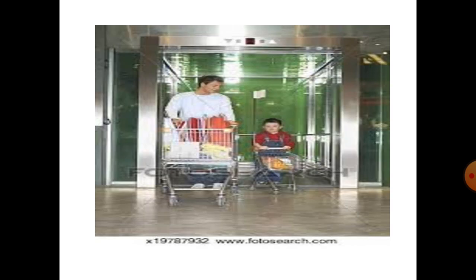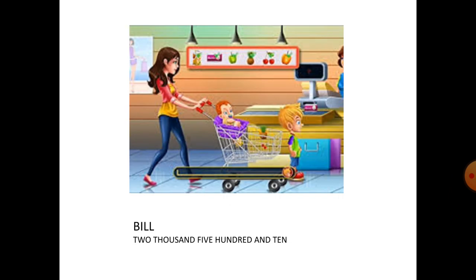Ali was very excited because it was his mother's birthday. He went to the shop to buy a gift and they found a nice gift. At the billing counter, Ali was surprised because the shopkeeper told his father to pay rupees two thousand five hundred and ten. Ali had never heard something like two thousand five hundred and ten — he knew that two five one zero is a four-digit number.